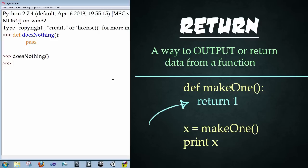We're going to type def space lowercase makeOne, open close parentheses, colon, enter, return 1, enter, enter. All right, so it's accepted it.